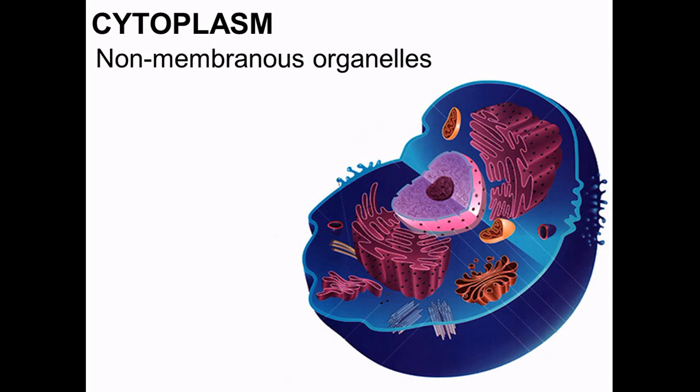We've talked about the cell membrane, the outer membrane that goes around the cell. Now we're going to shift over and talk about the stuff inside the cell. We're going to talk about the cytoplasm first, and we're going to split it into the non-membranous organelles and the membranous organelles.